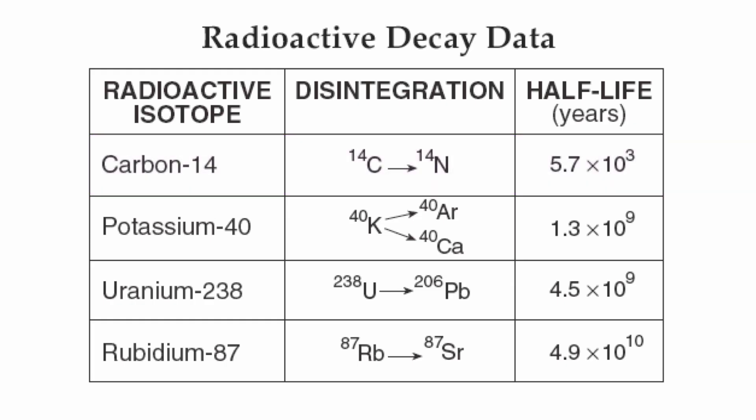The next isotope down is potassium-40. Now potassium-40 actually has two decay products. It's going to change into either argon-40 or calcium-40, and that takes 1.3 billion years for potassium-40 to change into one of its decay products.